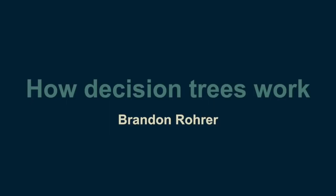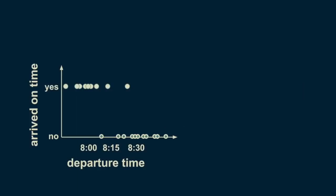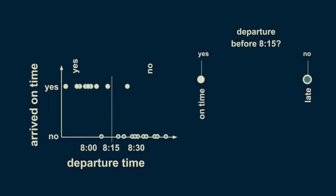The concept behind decision trees is refreshingly straightforward. Imagine creating a dataset by recording the time you left your house and noting whether you arrived at work on time. Looking at it, you can see that for the most part, departure times before 8:15 result in punctuality, and departure times after 8:15 result in tardiness. You can summarize this pattern in a decision tree. The very first branching point is the question: did departure occur before 8:15?